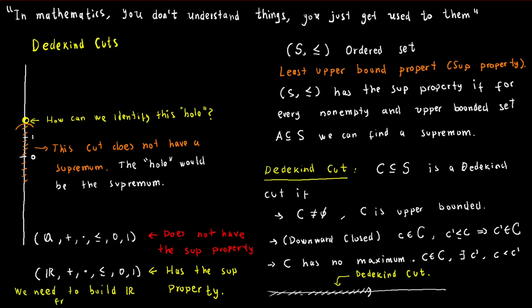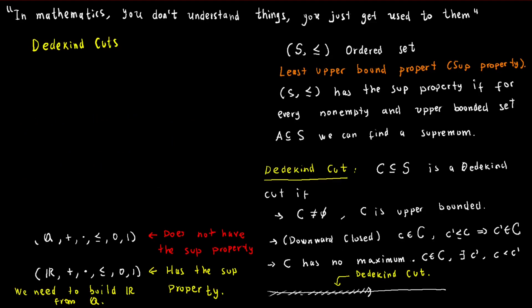In order to prove that the real numbers have the supremum property, we must construct them from the rationals. One approach to achieve this is by defining the real numbers as the Dedekind cuts of the rationals. However, this construction can be perplexing as it implies that each real number is a set containing infinitely many rational numbers.